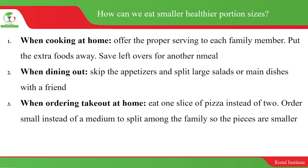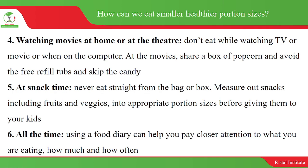How can we eat smaller, healthier portion sizes? When cooking at home, offer the proper serving to each family member, put extra foods away, and save leftovers for another meal. When dining out, skip the appetizers and split large salads or main dishes with a friend. When ordering takeout, eat one slice of pizza instead of two, or order small instead of medium to split among the family. When watching movies, do not eat while watching TV or a movie — at the theater, share a box of popcorn, avoid free refills, and skip the candy.